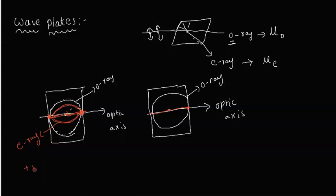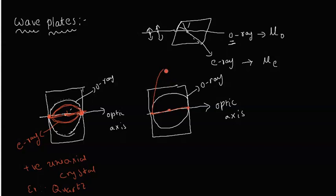This is a positive uniaxial crystal. For example, quartz crystal is a positive uniaxial crystal. In quartz, the extraordinary ray travels with less speed compared to the ordinary ray in directions other than the optic axis, so the path of the extraordinary ray lies within the ordinary ray's circular wavefront, forming an elliptical shape.